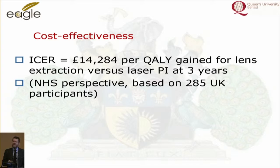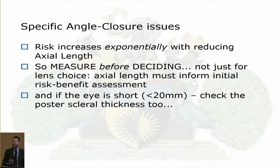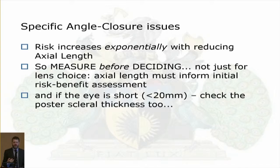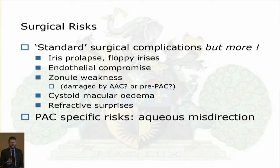The EGLE trial showed that clear lens extraction in individuals at risk with high pressure or existing glaucoma was cost-effective, quality-of-life improving, with a better intraocular pressure outcome. This is substantially changing practice — more people are doing clear lens extractions for patients over 50. The caveat is these were high-risk patients with high pressure, over 50 and presbyopic. Specific angle closure concerns around phacoemulsification include exponentially increasing surgical risk with reducing axial length, so we measure axial length and posterior scleral thickness before deciding.